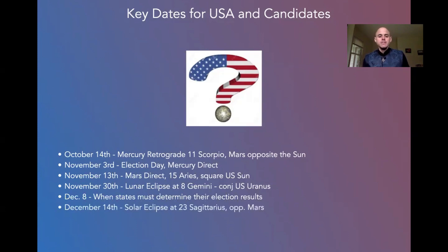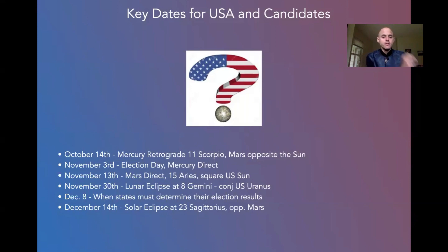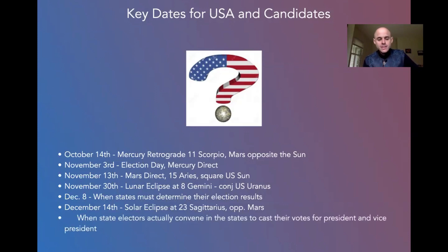December 14th, solar eclipse at 23 Sagittarius opposite the U.S. Mars. Mars: conflict, combat, aggression, anger, fury, fire. Eclipses are always the most intense time of the year — always karmic cycles — a sense of one phase of evolution ending and another beginning. When you have eclipses on a country's Uranus and Mars, two very volatile planets, right after the most possibly important election of all time, we can see the handwriting on the wall. December 14th happens to be the day when state electors actually convene in states to cast their votes for president and vice president — the day of the solar eclipse.